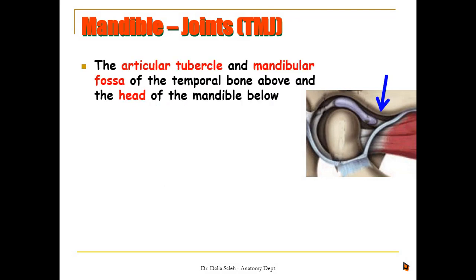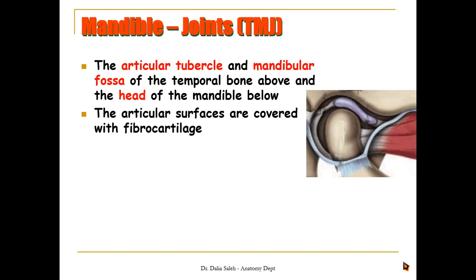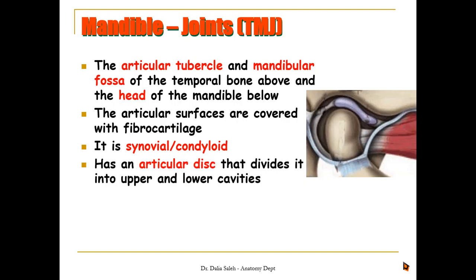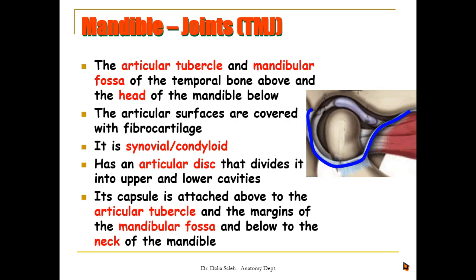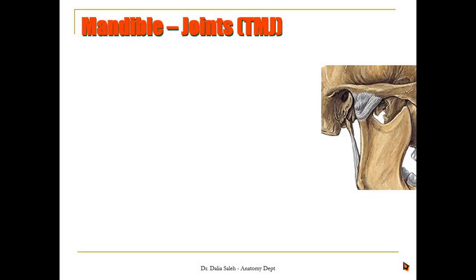For the temporomandibular joint, it is formed by the articulation of the articular tubercle and the mandibular fossa of the temporal bone at the base of the skull, together with the head of the mandible — or the condyloid process — below. The articular surfaces are covered with fibrocartilage. It is a synovial condyloid joint. Inside the joint, there is an articular disc that divides the cavity of the TMJ into upper and lower cavities. It is surrounded by a capsule attached above to the articular tubercle and margins of the mandibular fossa, and below to the neck of the mandible.